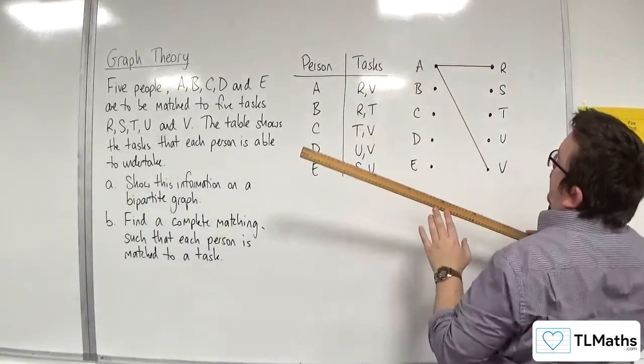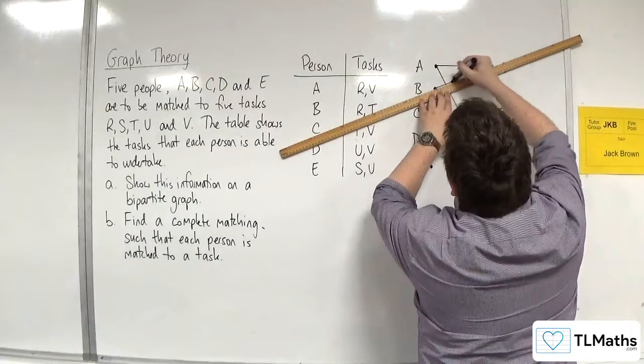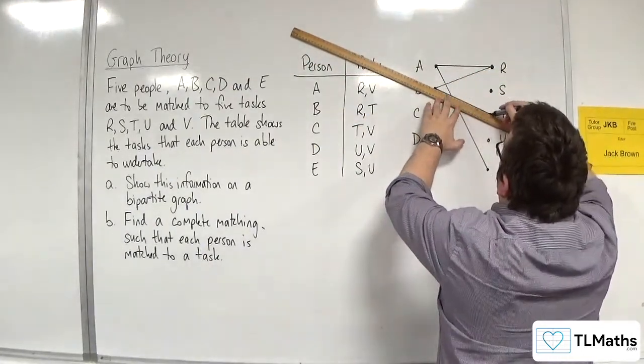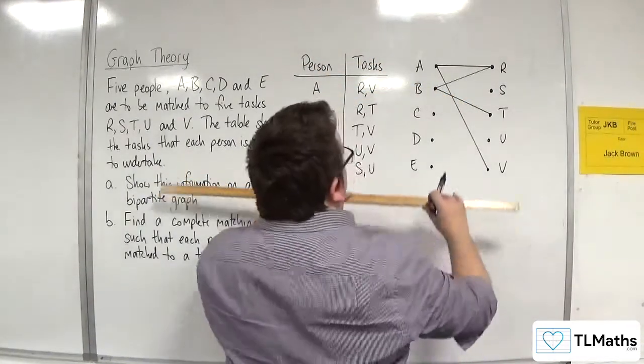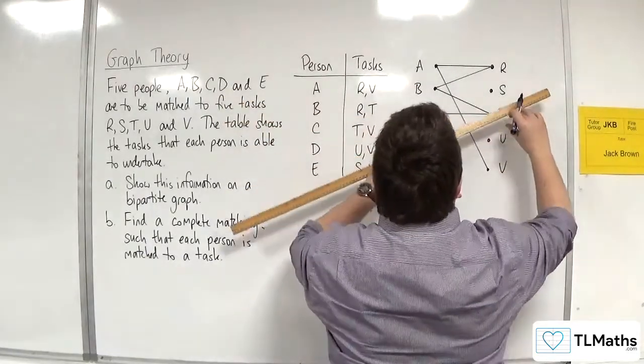Then we've got B can do R and T. Then we've got C does T and V.